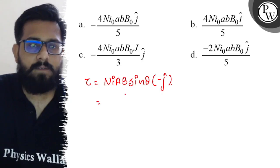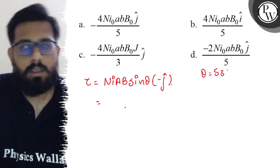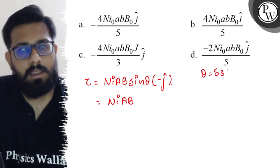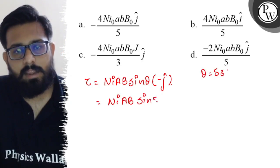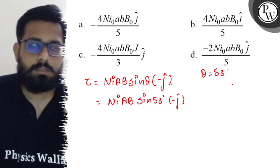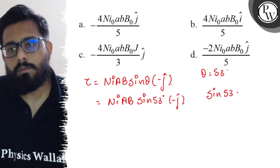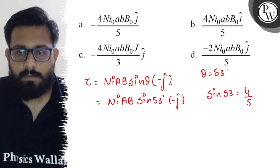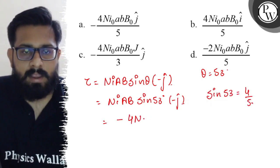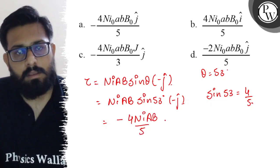Here the value of theta is 53 degrees. So n·i·a·b·sin53° times minus j-cap. Sin 53° equals 4/5, so this comes out to be minus 4n·i·a·b upon 5 j-cap.